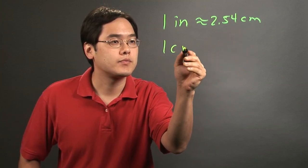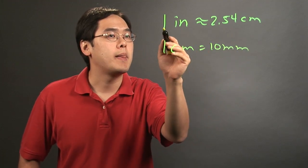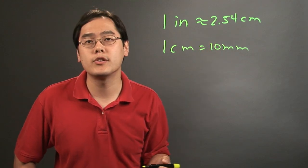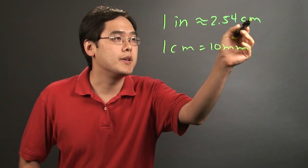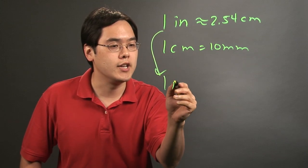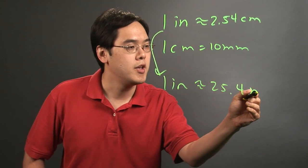what you can do is take the one inch approximately equal to 2.54 centimeters and then simply multiply this by 10. So the idea here is using this logic, you have one inch is approximately equal to 25.4 millimeters.